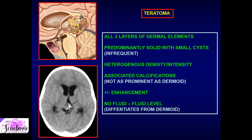Moving on to teratoma — the next form of primitive or congenital cell line tumor. Whereas dermoid and epidermoid are ectodermal in origin, teratoma contains two or three layers of dermal elements; it must contain at least two. This is a more aggressive form of neoplasm compared to dermoid and epidermoid, and has both solid and cystic components on CT and MRI.